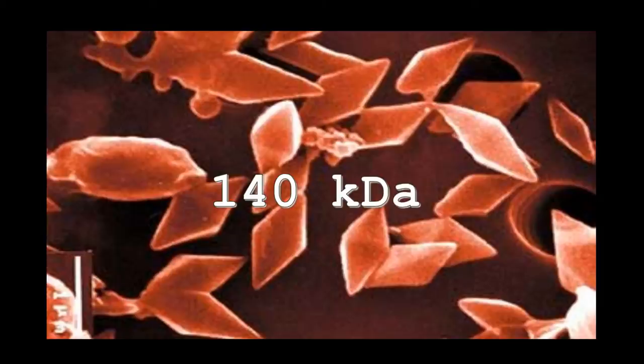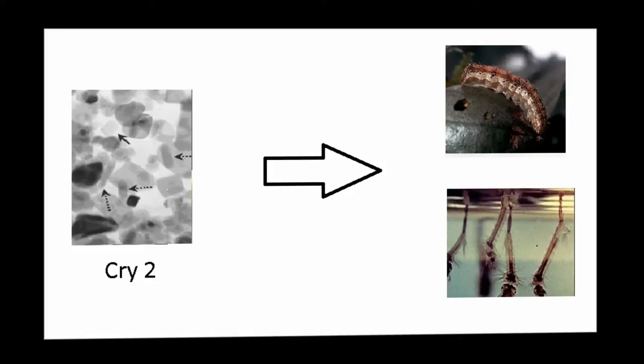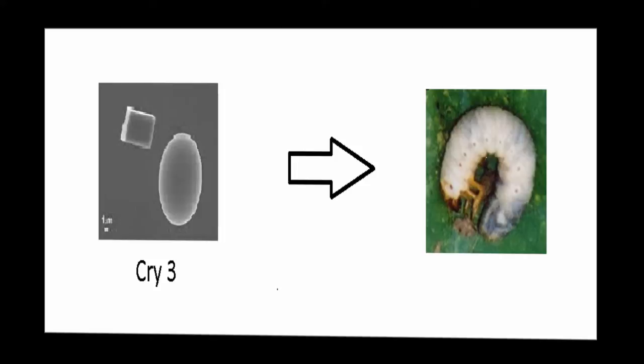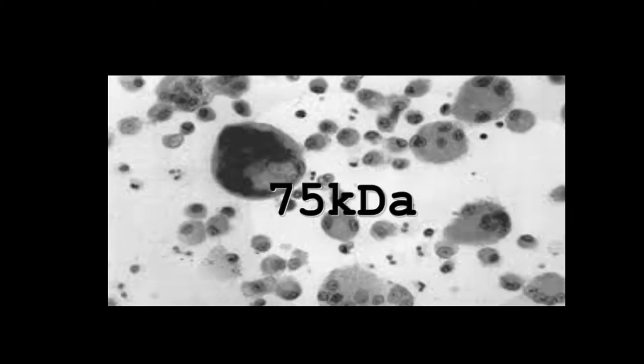The Cry2 endotoxins are characterized by their specificity to Lepidoptera and Diptera. The crystals are cuboidal in nature and they are about 70 kD in size. The Cry3 endotoxin shows insecticidal activity against Coleoptera. The crystals are flat and their size is about 75 kD.